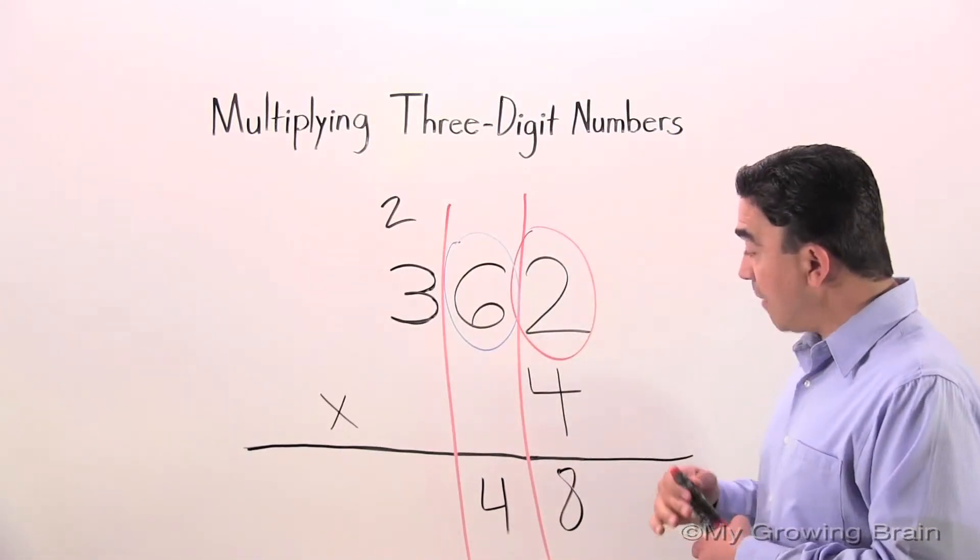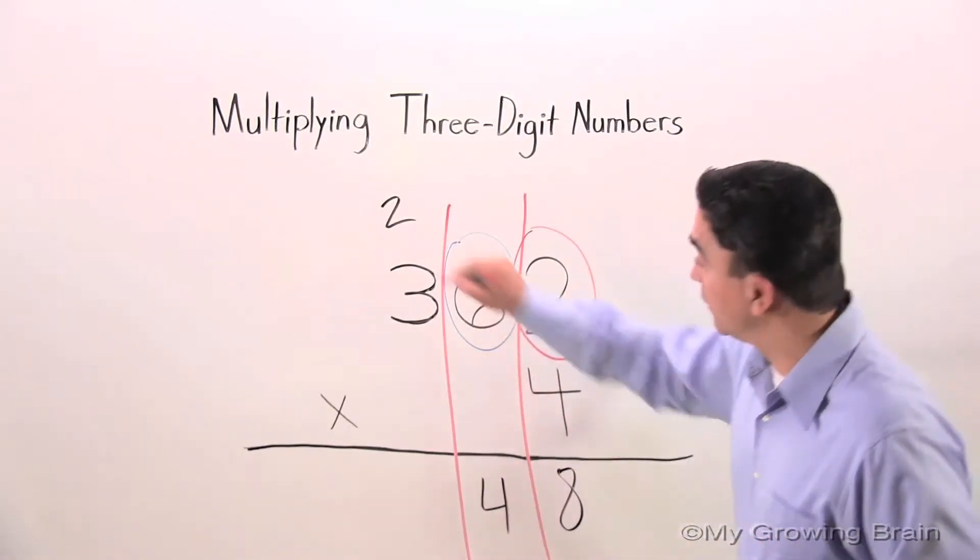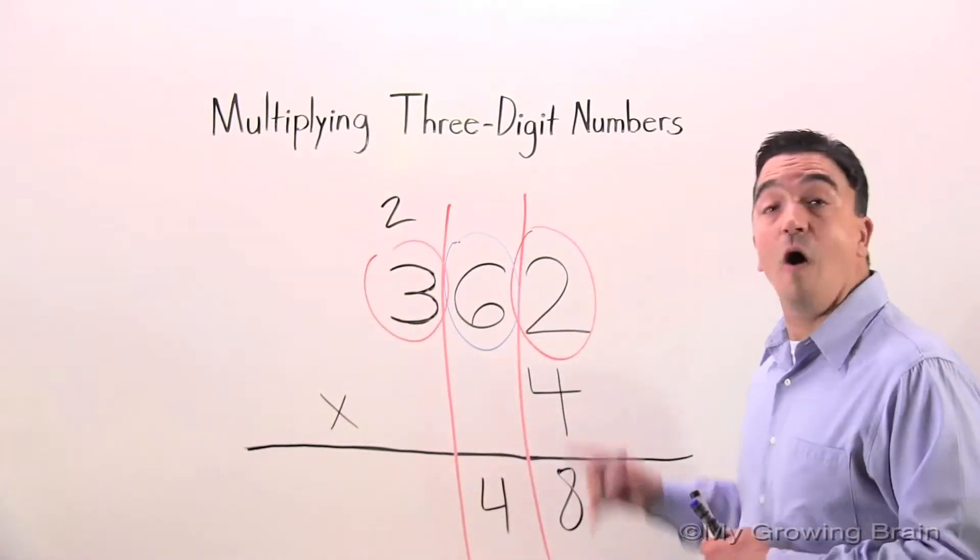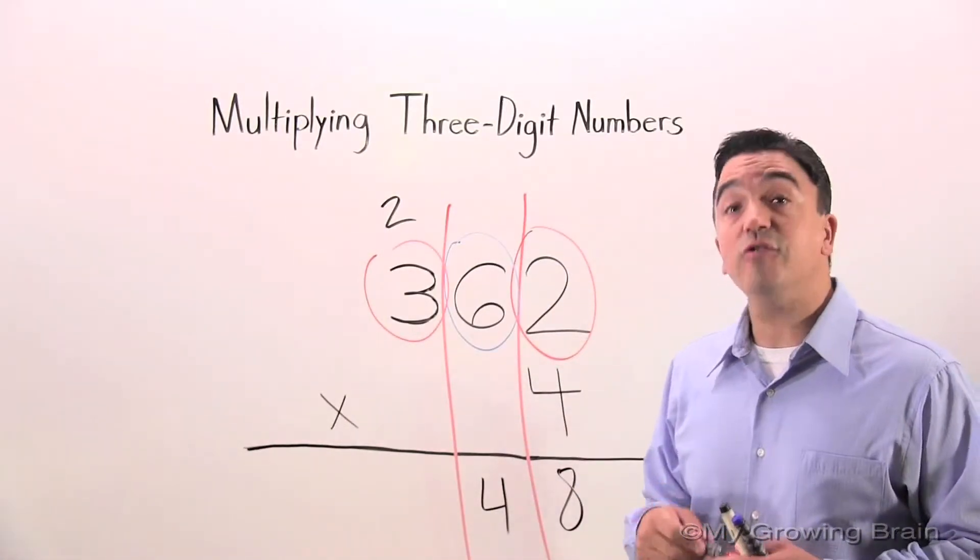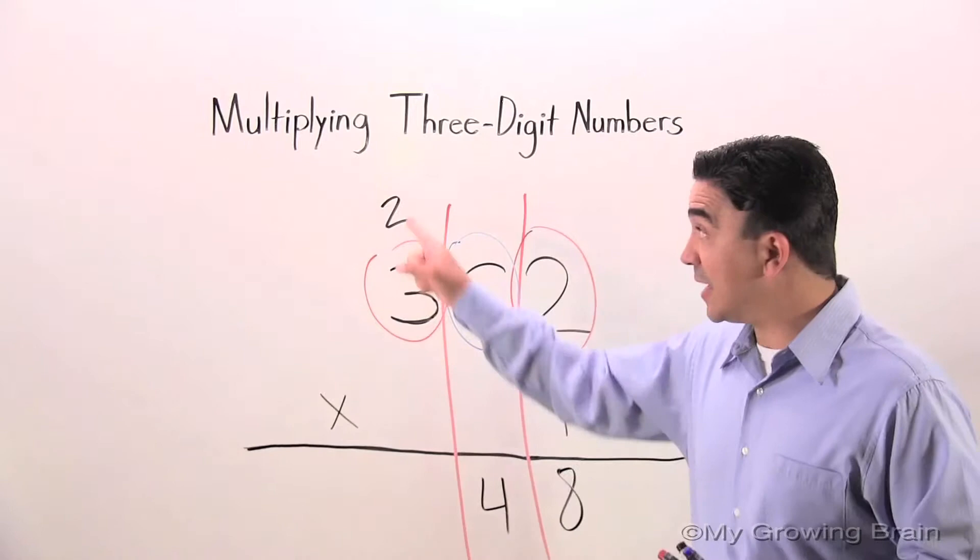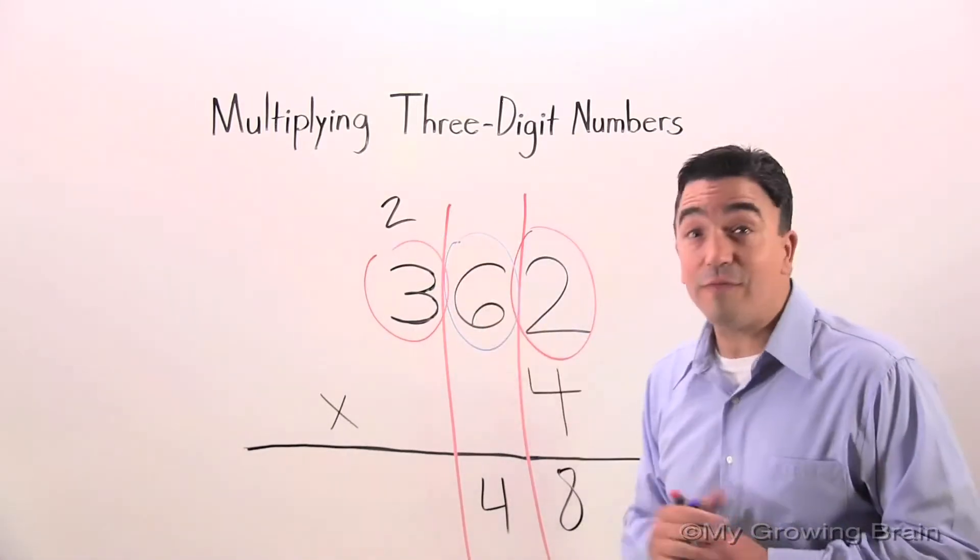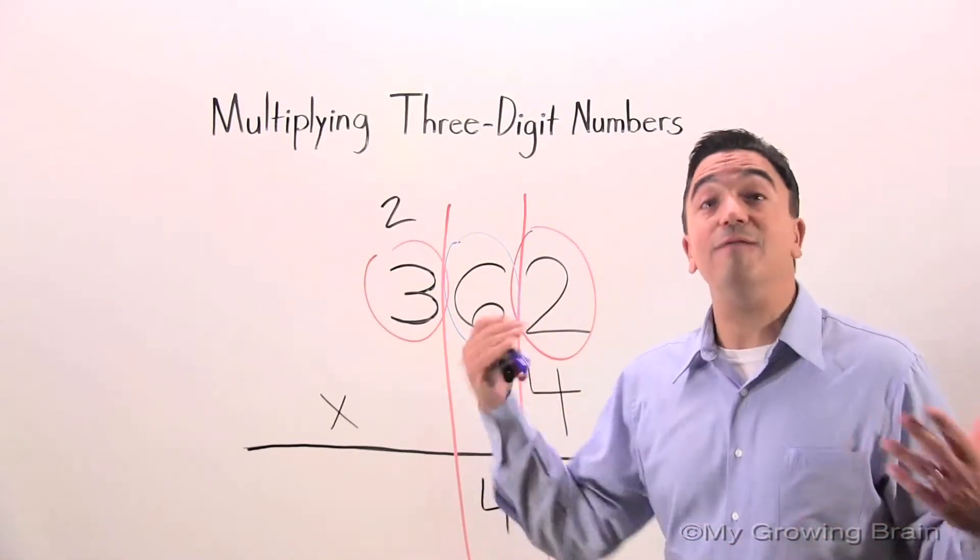Now, I'm going to multiply the four times the three. Four times three is 12. I'm going to add the two that were left over, and I'm going to make it 14.